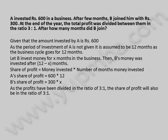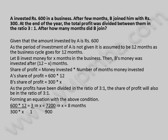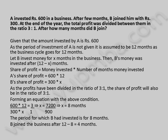As the profits have been divided in the ratio of 3 is to 1, the share of profit will also be in the ratio of 3 is to 1. Forming an equation with the above condition: 600 into 12 divided by 300 into X is equal to 3 by 1. This implies X is equal to 7,200 by 900, which implies X is equal to 8 months. The period for which B had invested is 8 months. B joined the business after 12 minus 8 is equal to 4 months.